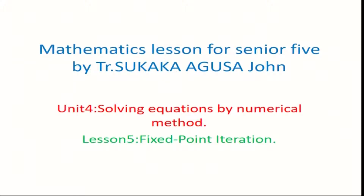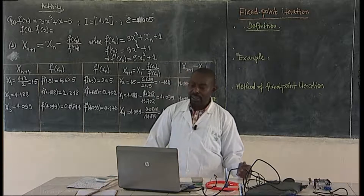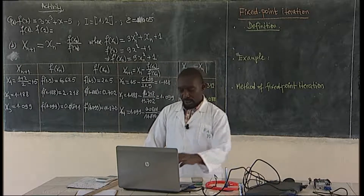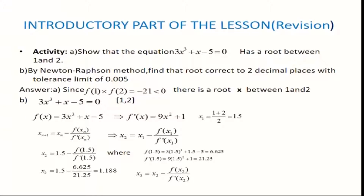Please get your exercise book. Of course, you may have your calculators handy, because these kinds of exercises need calculations. There you have an activity. Look at it on your screen. Show that the equation 3x³ + x - 5cos(x) = 0 has a root between 1 and 2. Then, by Newton-Raphson method, find the root correct to two decimal places with a tolerance limit of 0.005.